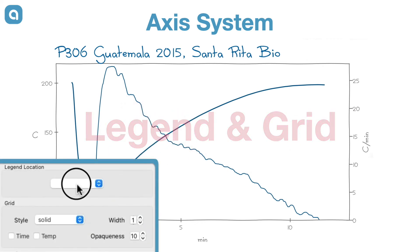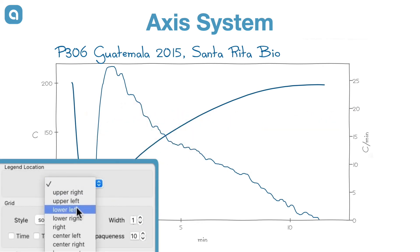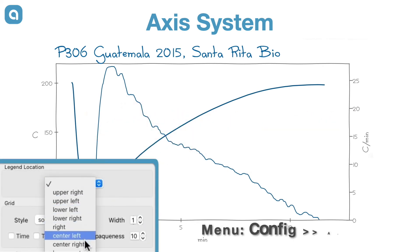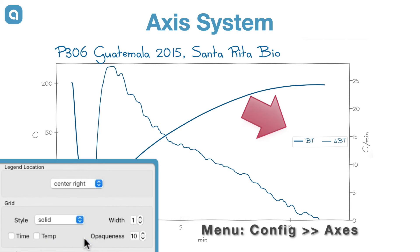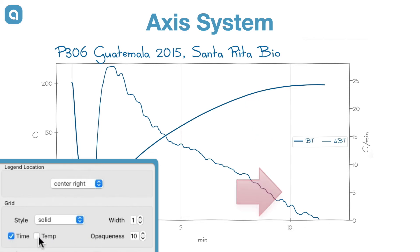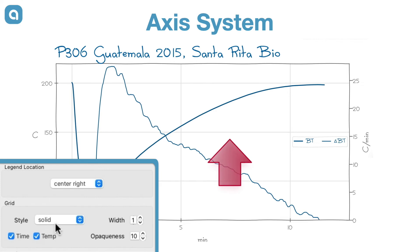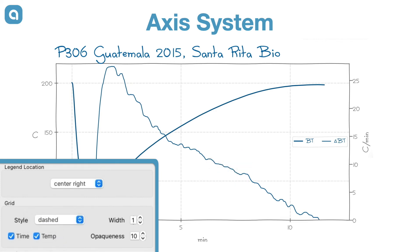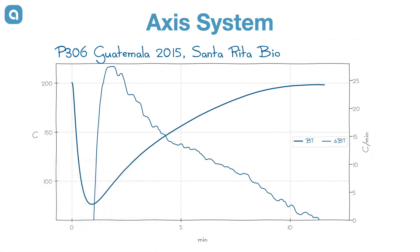A legend can be placed and grid lines can be drawn at the major tick locations. This legend can be moved.